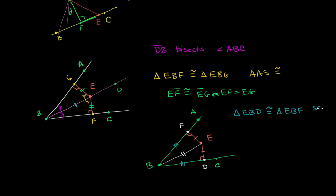We used SSS here, but you could have used RSH. RSH is essentially angle-side-side for right triangles — angle-side-side can't be used for any general triangle, but for right triangles, if two sides are congruent, then the two triangles are definitely congruent.